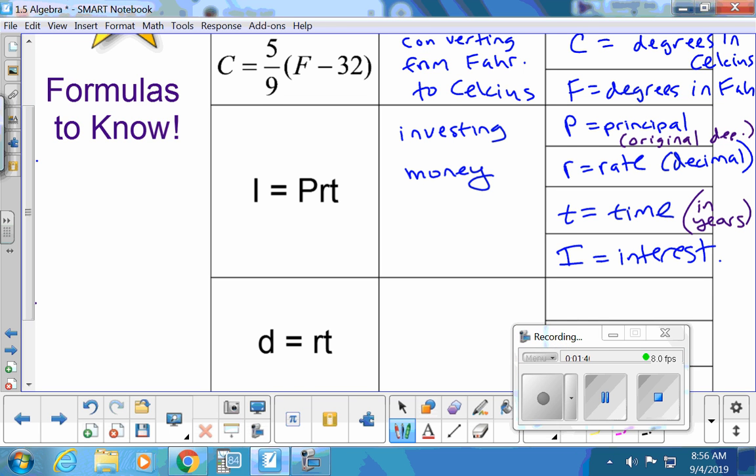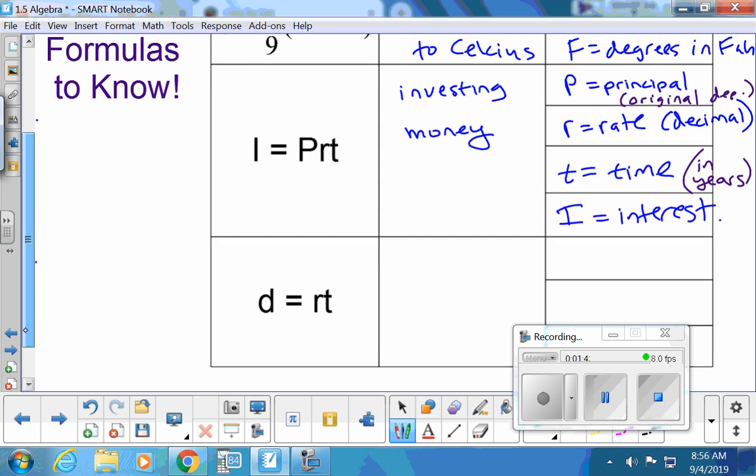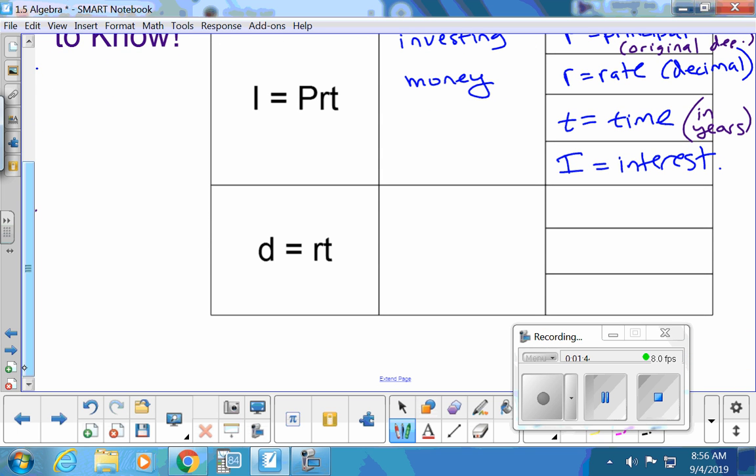Our final formula of the day, this is a very famous one. Distance equals rate times time. It can help you figure out how far you can travel. So D equals distance. This one you use more often than the other formula. R is your rate, like miles per hour. And then T is your time in hours normally. Your rate is your speed normally in miles per hour.